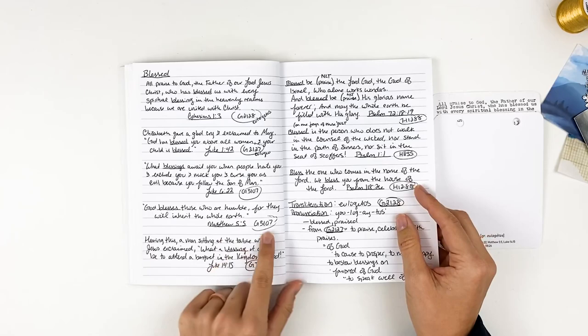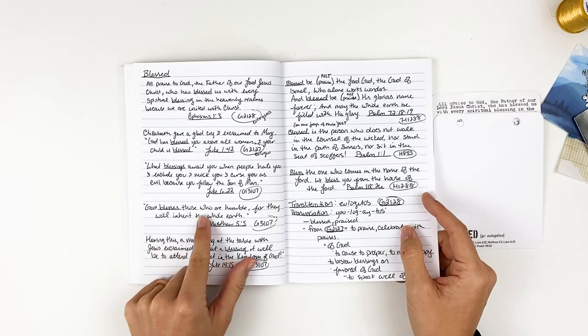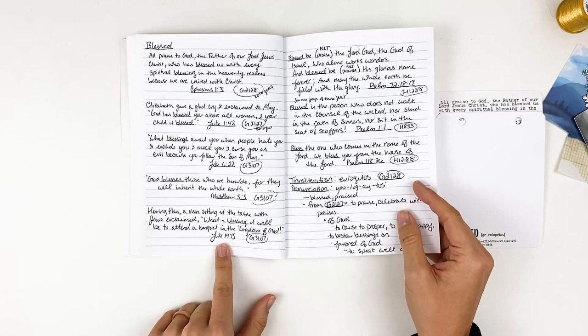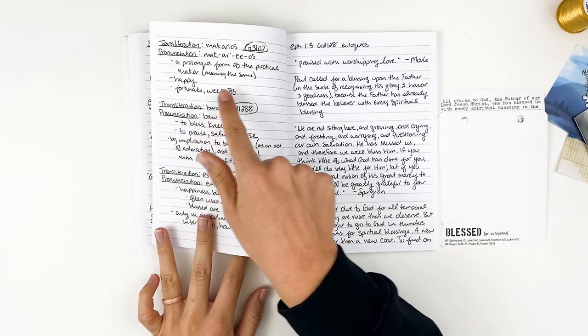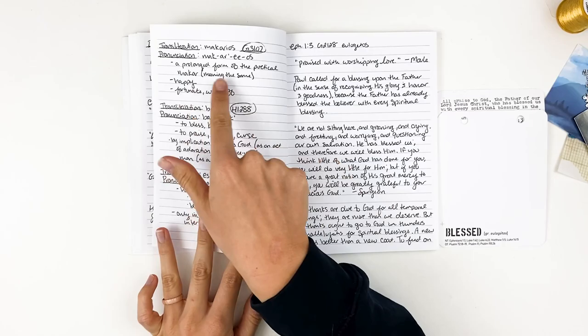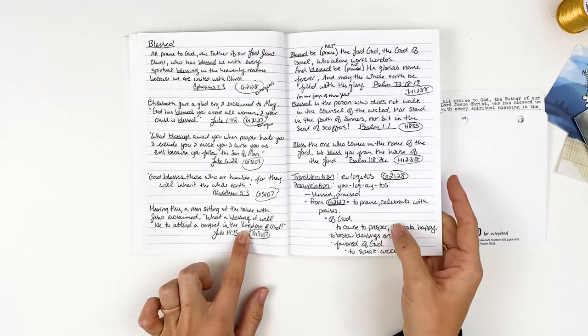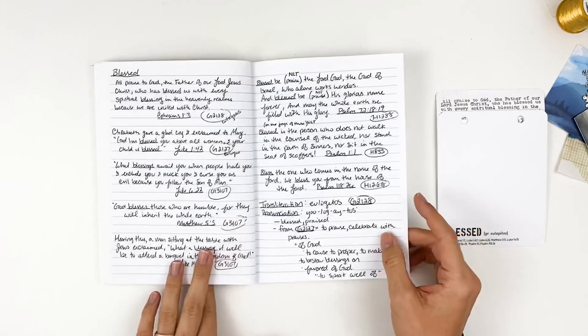So continuing on, Matthew 5:5 is going to be that same makarios word. God blesses those who are humble, for they will inherit the whole earth. Same thing for Luke 14:15. Hearing this, a man sitting at the table with Jesus exclaimed, what a blessing it will be to attend a banquet in the kingdom of God. Remembering fortunate, well off, happy, meaning the same prolonged form of the poetical makar. So how happy it will be to be able to attend the banquet in the kingdom of God.